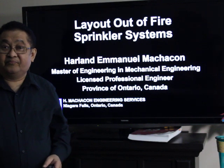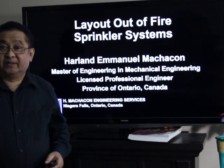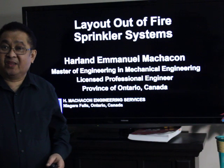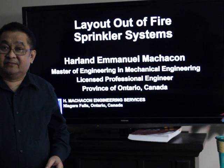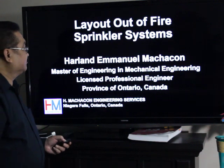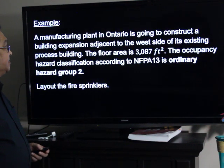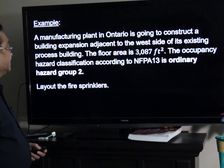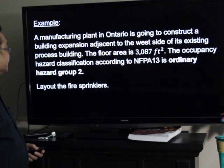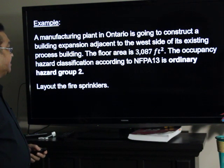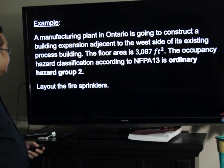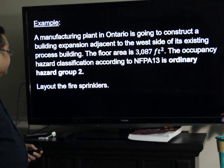Today, our topic is about the layout of fire sprinkler systems, and this can be best explained using an example. A manufacturing plant in Ontario is going to construct a building expansion adjacent to the west side of its existing process building. The floor area is 3,087 square feet. The occupancy hazard classification, according to NFPA 13, is Ordinary Hazard Group 2. Lay out the sprinklers.